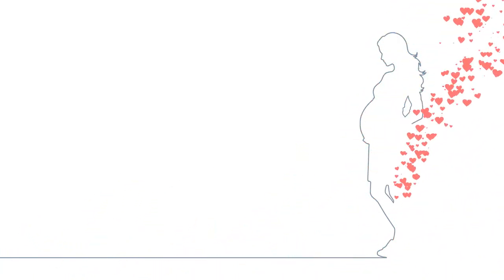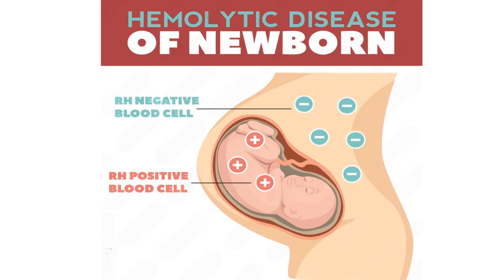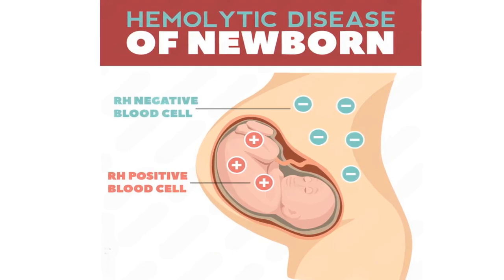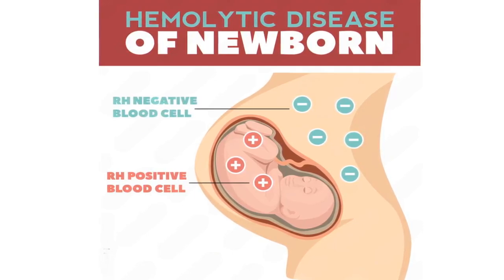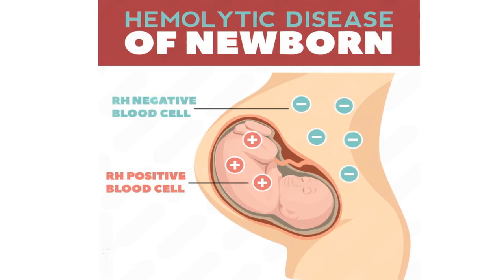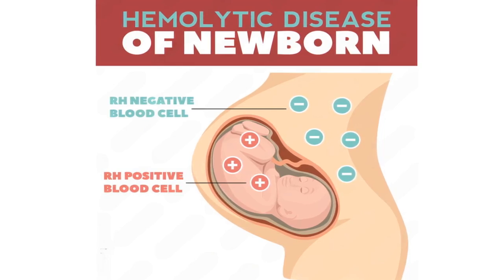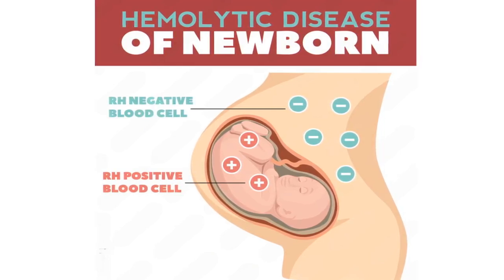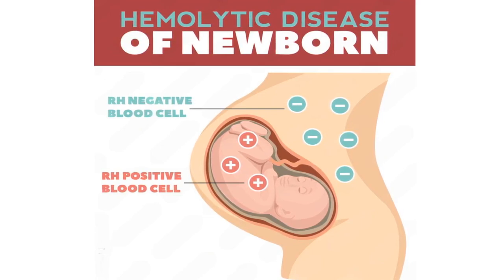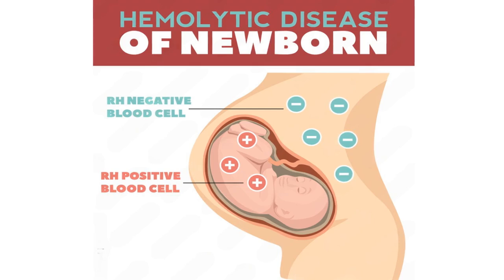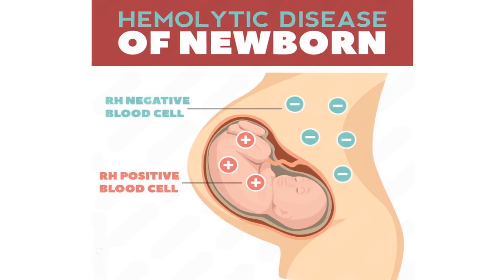Number 10. Why is blood grouping important during pregnancy and what is RH incompatibility? Blood grouping is crucial during pregnancy to identify any ABO or RH incompatibility between the mother and the baby. RH incompatibility occurs if an RH negative mother carries an RH positive baby. Her immune system may produce antibodies against the baby's RH positive red blood cells, causing conditions like hemolytic disease of the newborn. Early detection allows for preventive treatment, such as administering RH immunoglobulin, to protect both the mother and the baby.